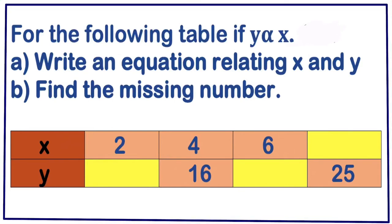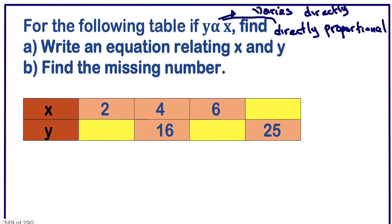Welcome to Smart Mathematics Pro. Today we are going to solve a variation problem. For the following table, if y varies directly as x, write an equation relating x and y. In some cases you might not be asked to write the equation, but you can just be asked to complete the table. Still, you need to write this equation in order to complete the table.